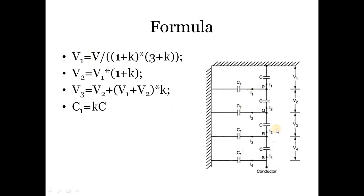So these are the formulas for the voltage distribution. If there are four disks and C is the mutual capacitance between each disk, and C1 is the shunt capacitance, then V1, V2, V3, V4 are the voltages across the four disks. V1 can be given by V, which is the total voltage, upon 1 plus K multiplied by 3 plus K.